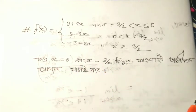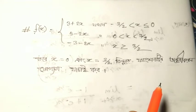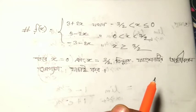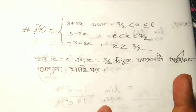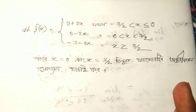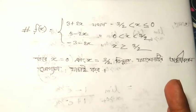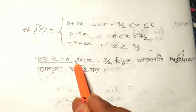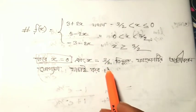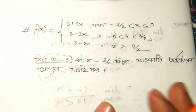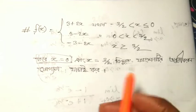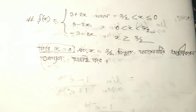Then x equals 0 or x equals 3/2. We check differentiability at these points. At x equals 3/2, the function appears. We first check x equals 3/2; the function value is equal to 0. So the first thing is that the left-hand derivative equals the right-hand derivative.